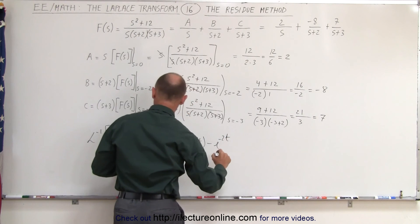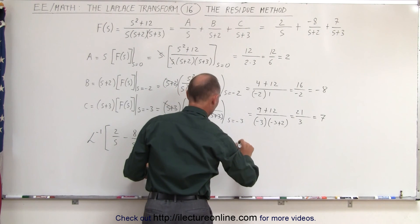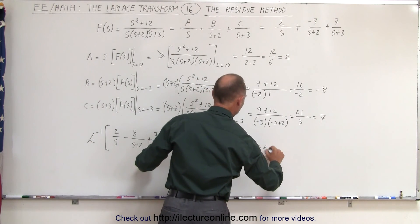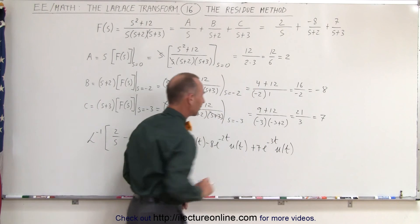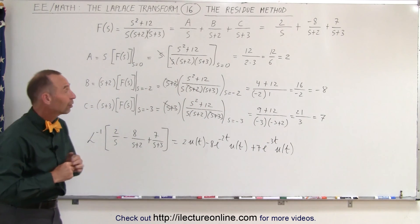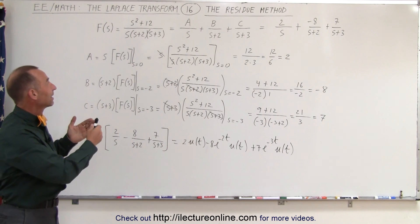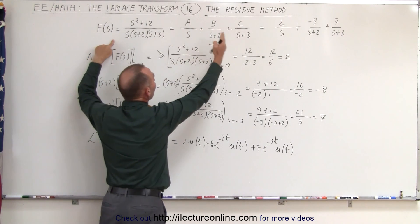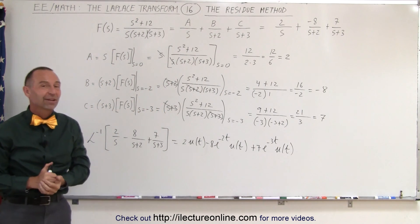If you want to find the inverse Laplace transformation of this function, that would be 2 times the step function u(t), minus 8 times e to the minus 2t times the step function u(t), plus 7 times e to the minus 3t times the step function u(t). You can factor out u(t), but that's a good way to write the final answer. Here you can see there's another method to take the initial function in the frequency domain, write it as a sum of fractions, and find the values for A, B, and C using the residue method — and that's how it's done.